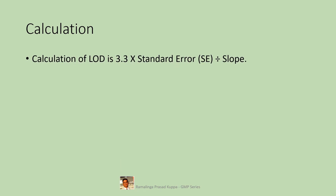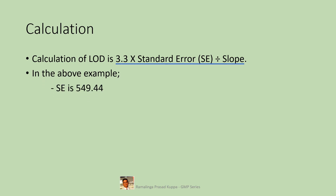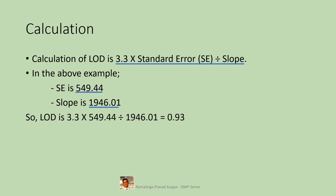The calculation of LOD is: 3.3 multiplied by the standard error (SE) divided by the slope. Remember this simple formula — 3.3 times the ratio of standard error to slope equals LOD or DL. In the above example, standard error is 549.44 and slope is 1946.01, so LOD = 3.3 × 549.44 / 1946.01 = 0.93.